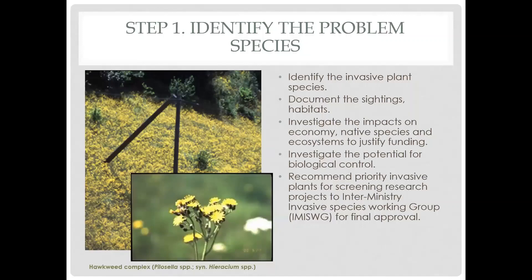First, we identify the plant species — currently often to the genetic level. We document the sightings and habitats, using IOP (which will soon be Invasive BC) to record all that information. We investigate the impacts on economy, native species, and ecosystems to justify the funding. A case must be made to warrant funding for a screening project, considering current scientific and political factors. We also investigate the potential for biological control, as some plants are not conducive and some insects attack far too many species and are not host-specific. The final decision on which invasive plants to prioritize for screening projects is made by the Inter-Ministry Invasive Species Working Group.